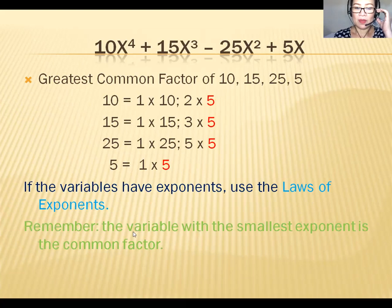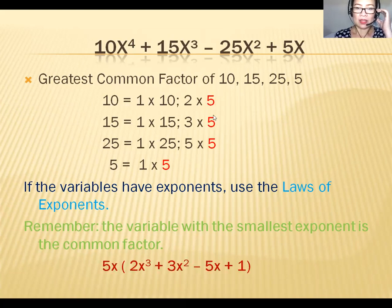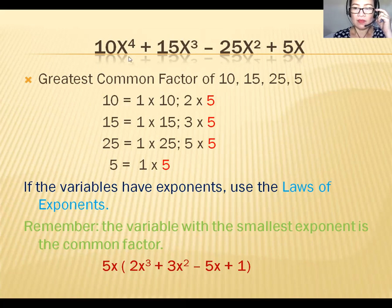Look for the lowest exponent of the variable. The exponent is the number in the upper right after the variable. The smallest exponent is x¹, so take out x together with the GCF of the coefficient: 5x. Then divide: 10x⁴ ÷ 5x — in division, subtract the exponents — gives 2x³.